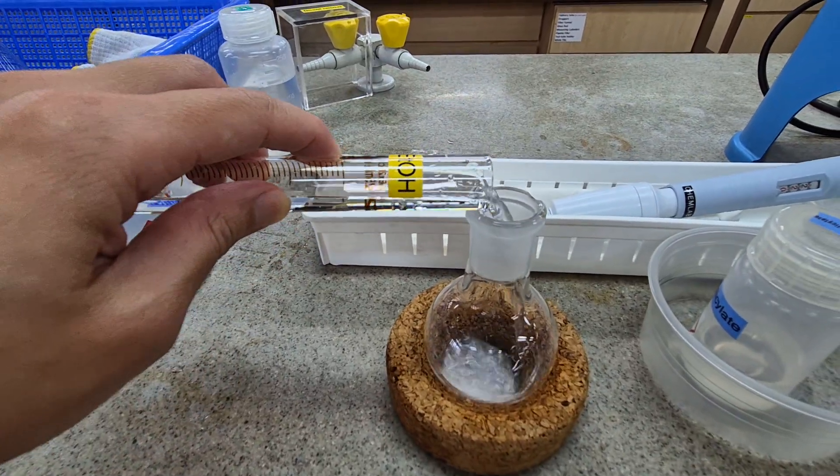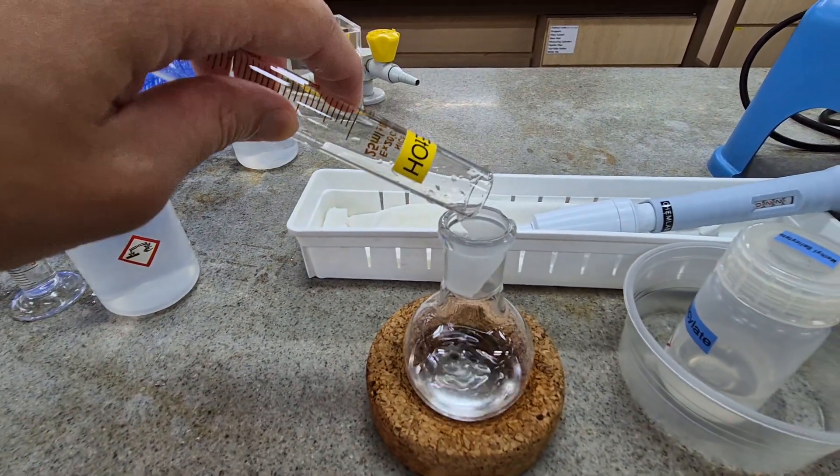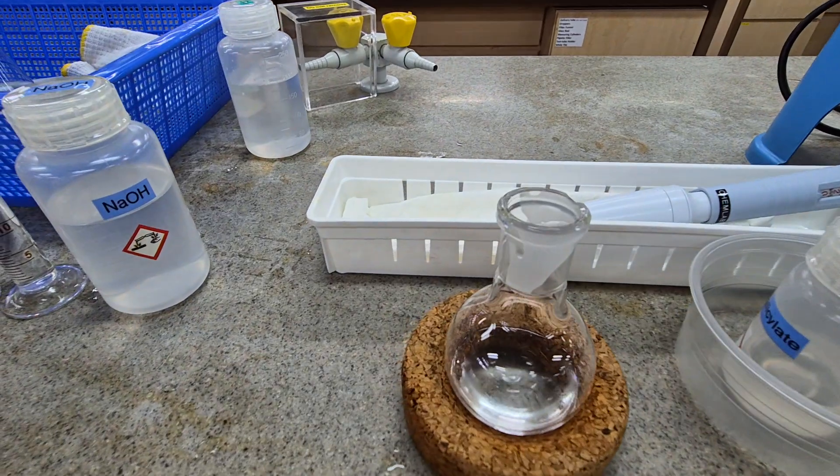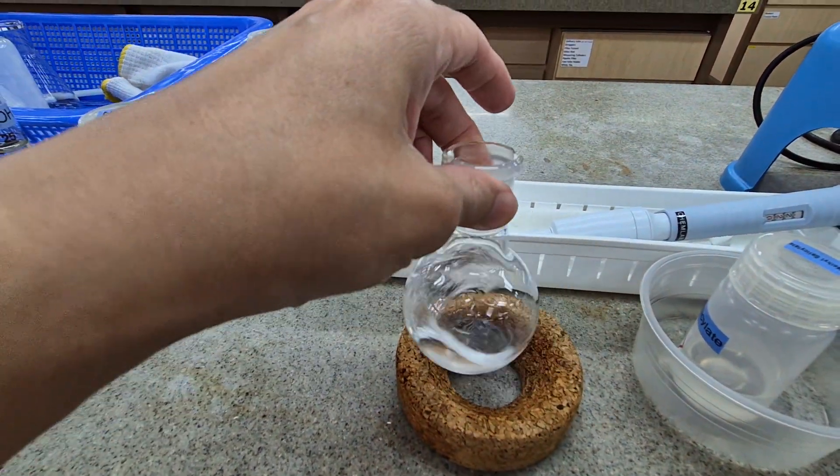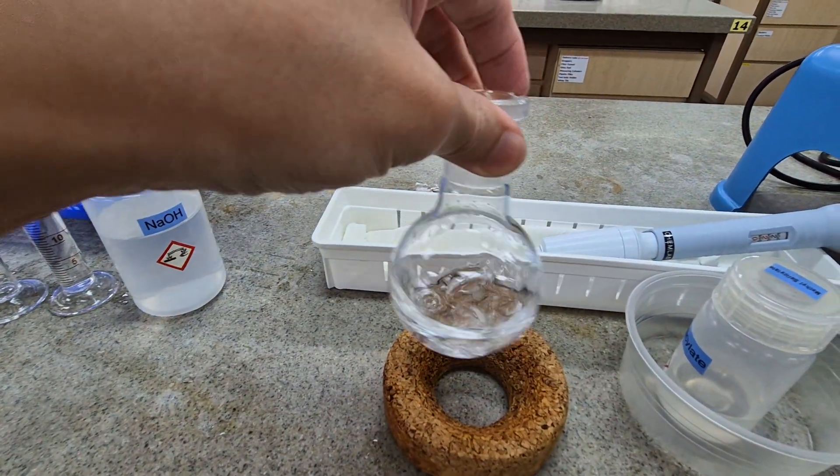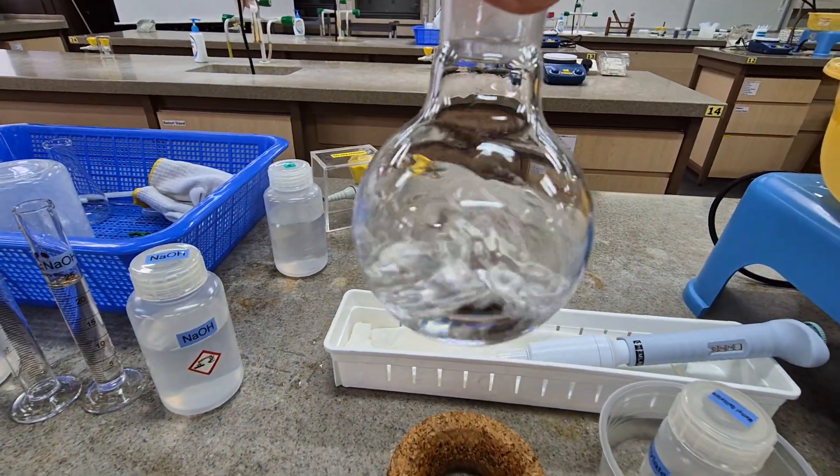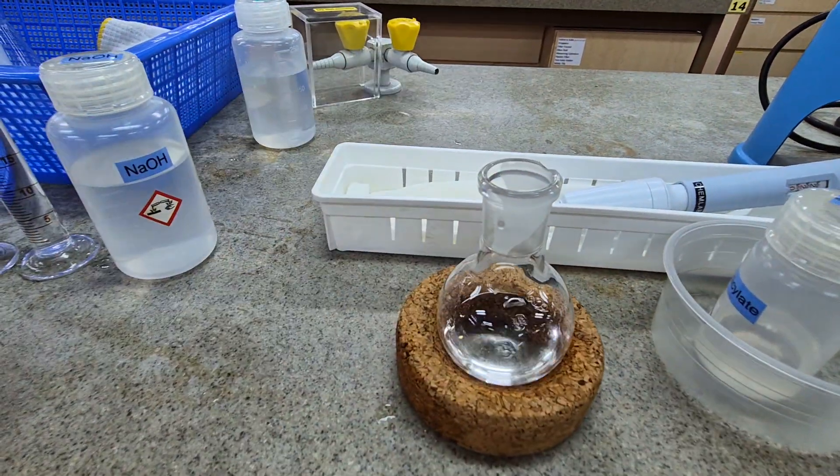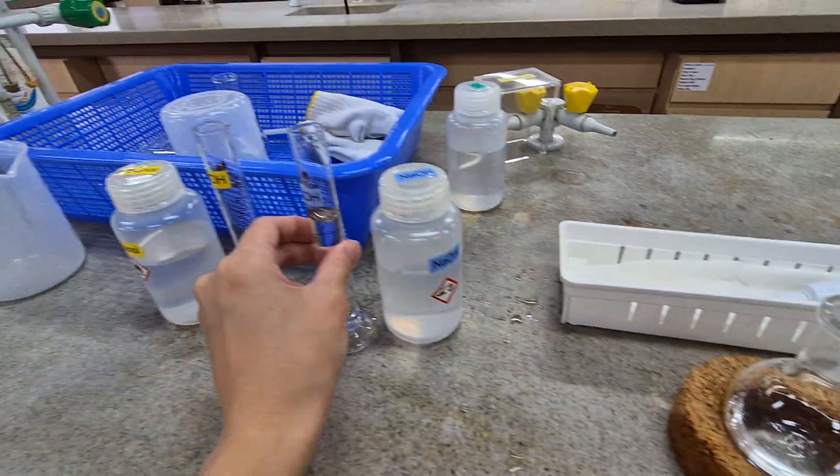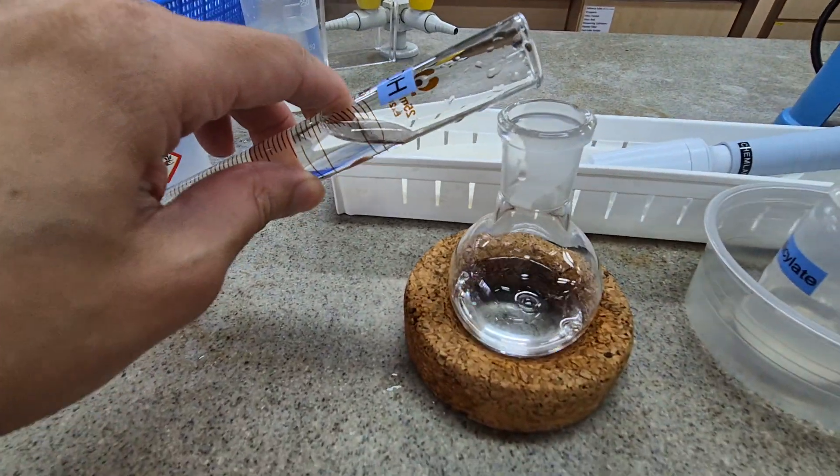I'm going to do a light swirl so the methyl salicylate will just dissolve in it. You can see that the solution is kind of colorless. Now please take note of the changes when I add in sodium hydroxide, very carefully.